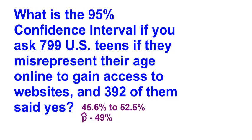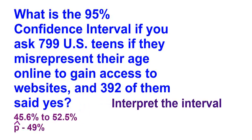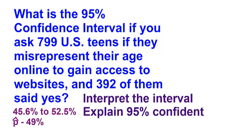The next thing is to interpret that interval. We would say that we are 95% confident that if we were to ask all U.S. teens whether they have misrepresented their age online, between 45.6% and 52.5% of them would say they have done that. To explain 95% confident: if we were to collect many random samples of 799 teens, about 95% of the confidence intervals we construct would contain the proportion of all U.S. teens who admit to misrepresenting their age online.